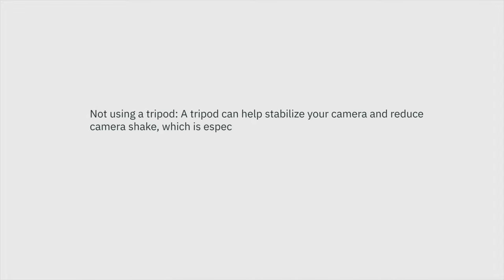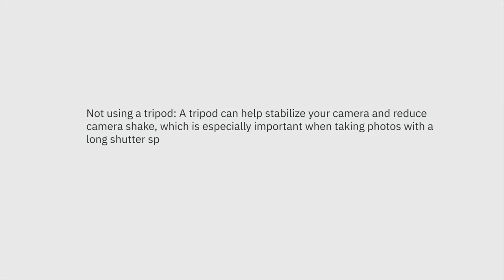Mistake number three: not using a tripod. A tripod can help stabilize your camera and reduce camera shake, which is especially important for long shutter or low light photography. This is the one point I didn't quite agree with the AI on. While tripods are an essential bit of kit, I actually shoot with a tripod very rarely — mostly for interiors. I don't want people to feel like they have to lug a tripod around all the time, but they are essential for certain shots.